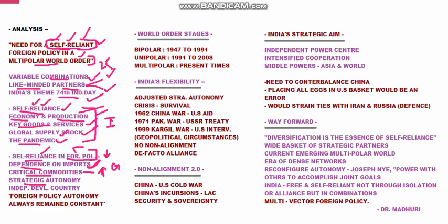India has always maintained strategic autonomy. We were never on the USSR side, US side, or China's side; we were never on one side in any war, conflict, or cold war. Non-alignment is the basic foreign policy of India. We are an independent developing country and take pride in that. Foreign policy autonomy has always remained constant — we were always autonomous, independent, and self-reliant. We must further increase our self-reliance with regard to imports, production, and economy.